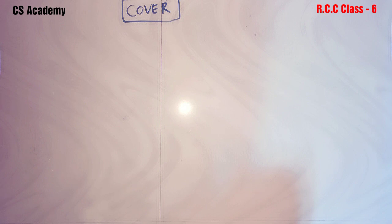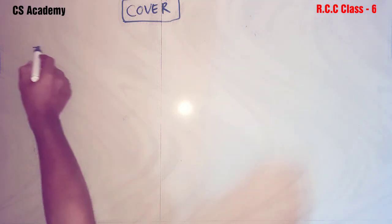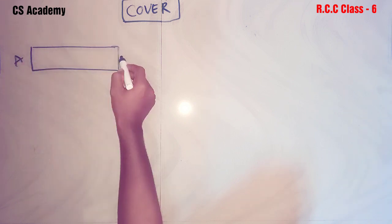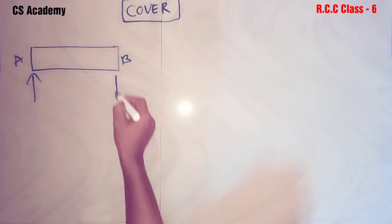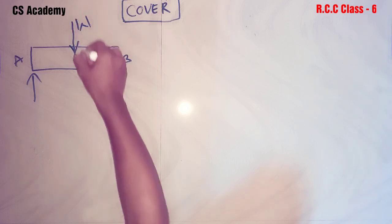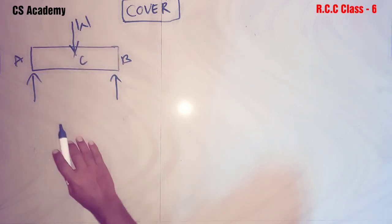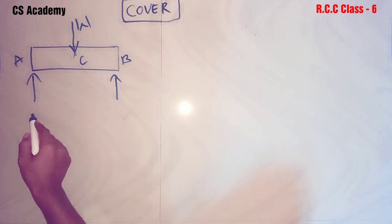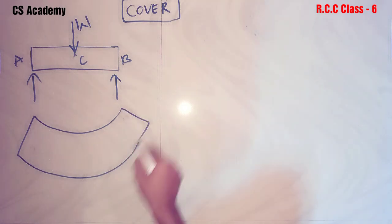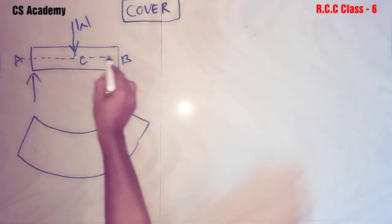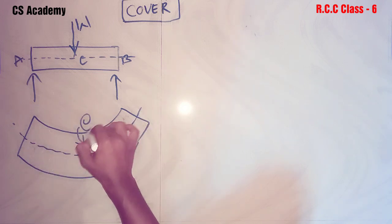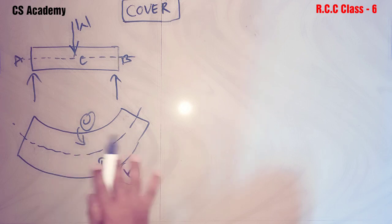In the last session we already discussed singly reinforcement beams and doubly reinforcement beams. Let us consider a simply supported beam of ends A and B, supported at two ends. This beam is carrying load W at point C. So the bending of this beam is taking place, and we have the longitudinal axis with a compressive zone and a tensile zone.